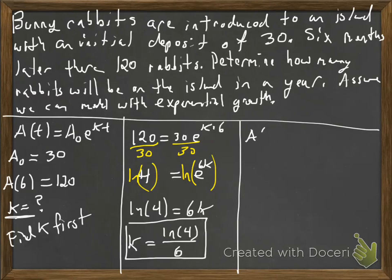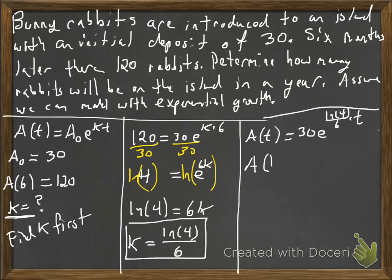All right. So now we can go ahead and find how many bunny rabbits there are in 12 months or a year. So we're going to plug in 12 into our formula. Okay. So we just rewrite. Here's what our formula looks like now because we have the k. That's our kind of like our interest rate, our growth rate there. And we're going to plug 12 in.